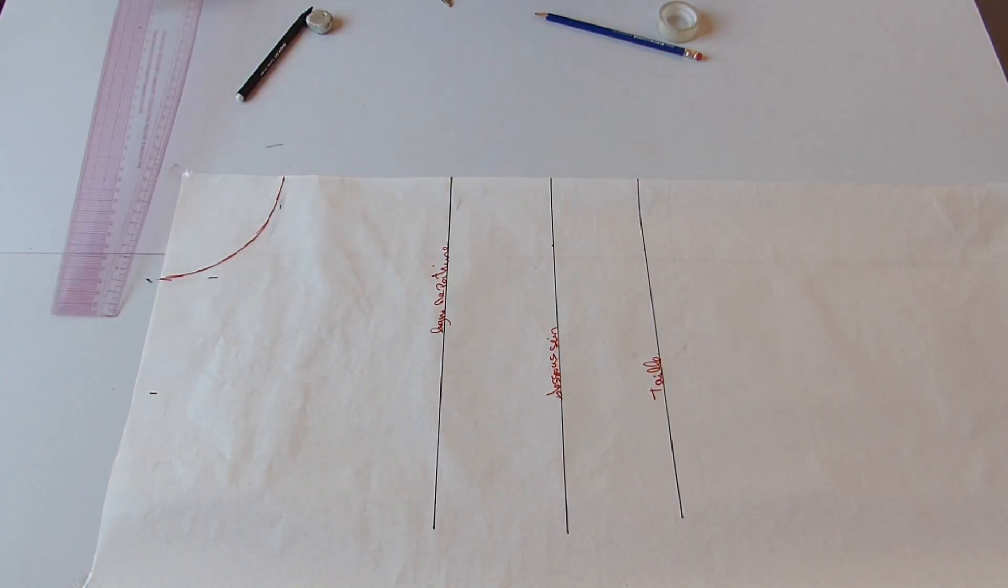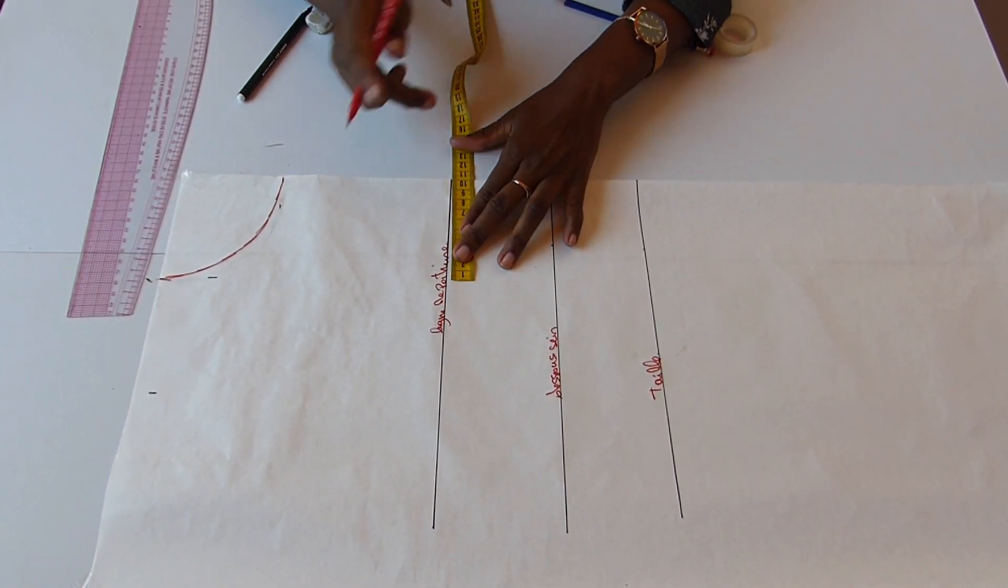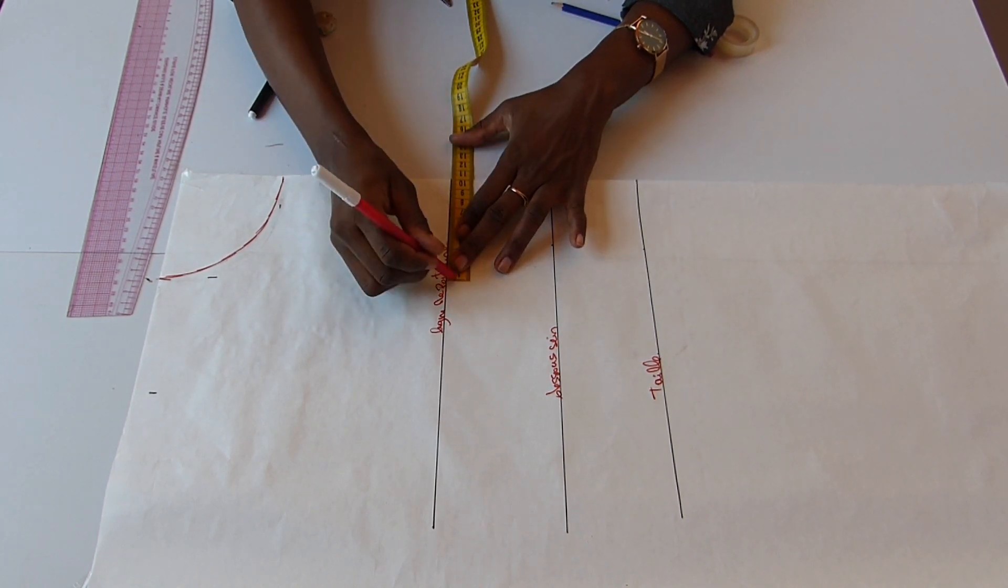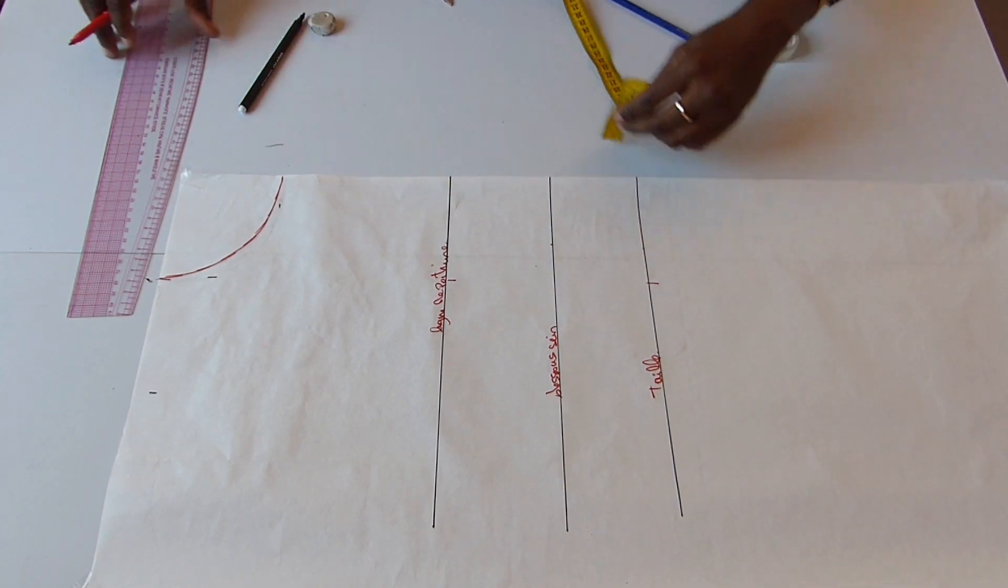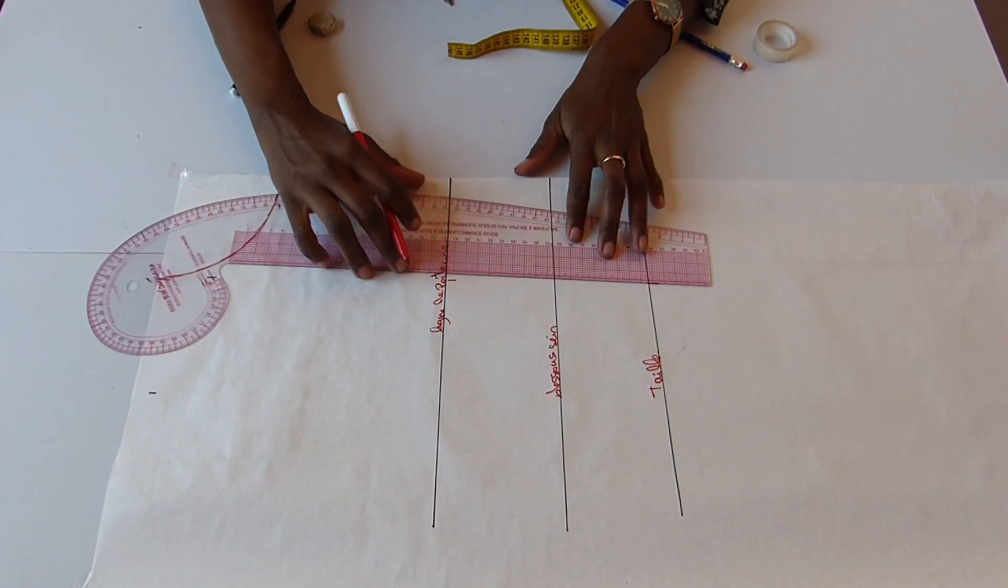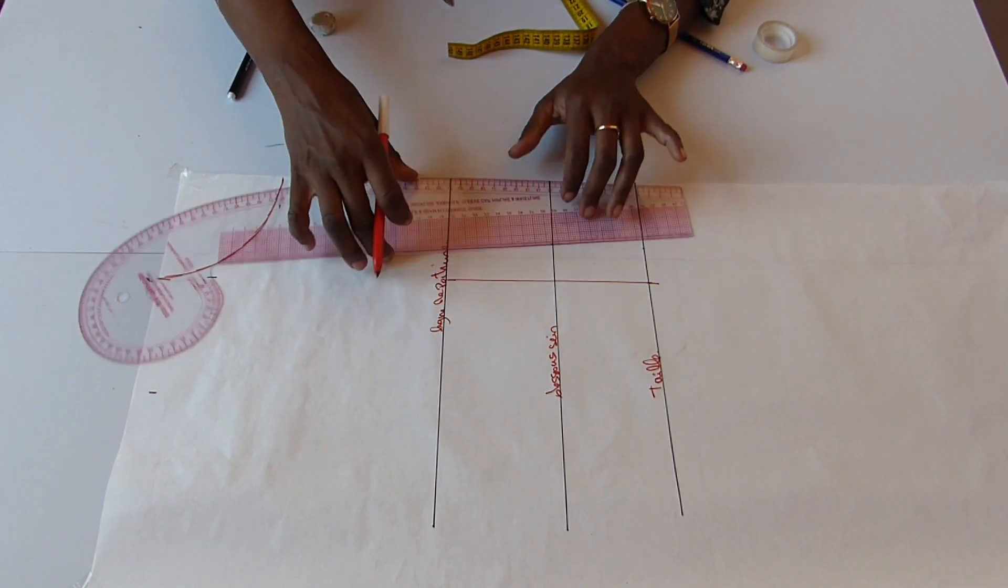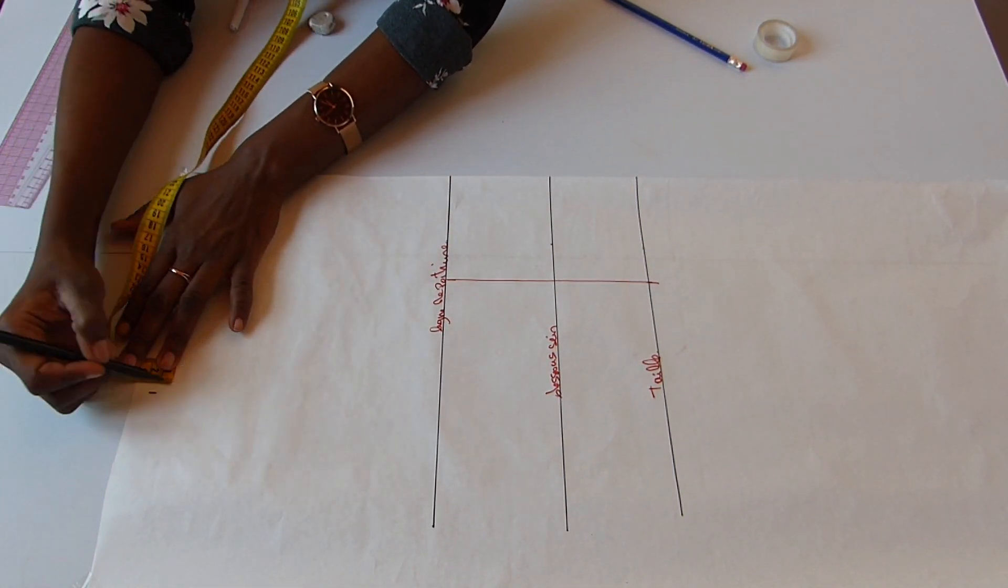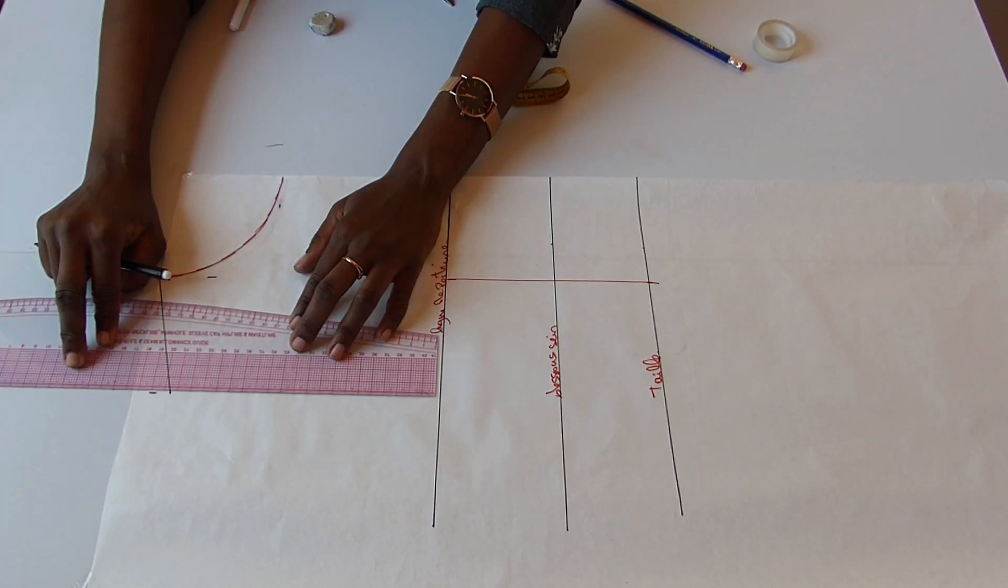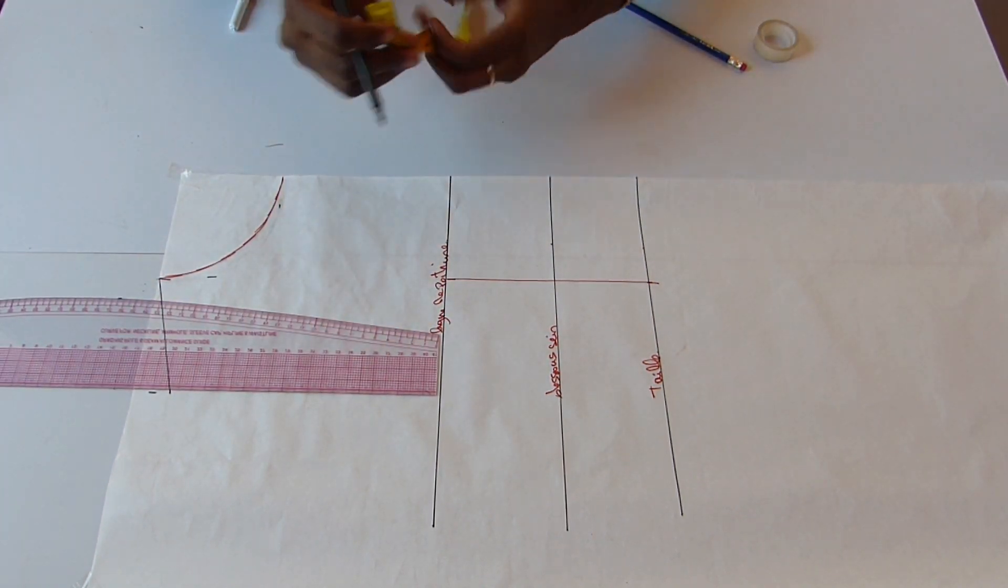Ce que je vais faire maintenant, c'est de pouvoir les nommer. Ce serait plus facile de travailler en sachant sur quelle ligne on est en train de travailler. Une fois que j'ai fini de faire ça, je vais venir pointer et fermer ma ligne de mon encolure qui est divisée par 2, et tracer une ligne droite pour relier tous les différents points que j'ai faits.